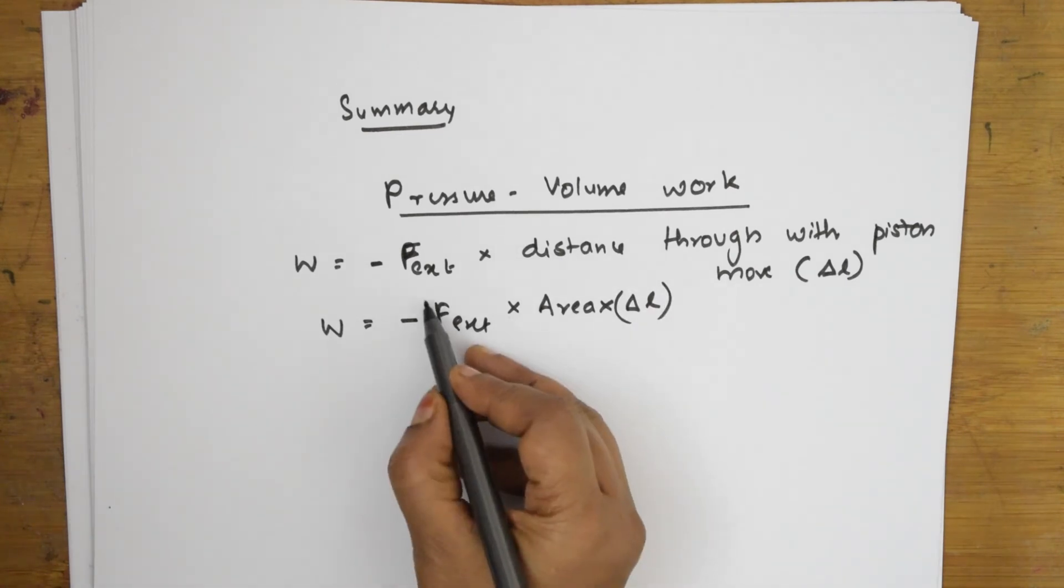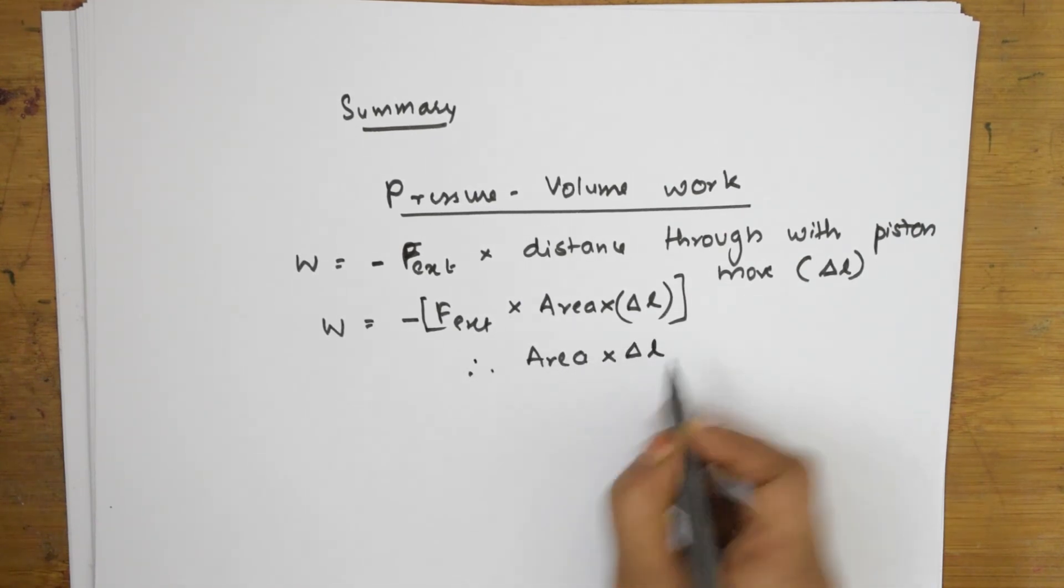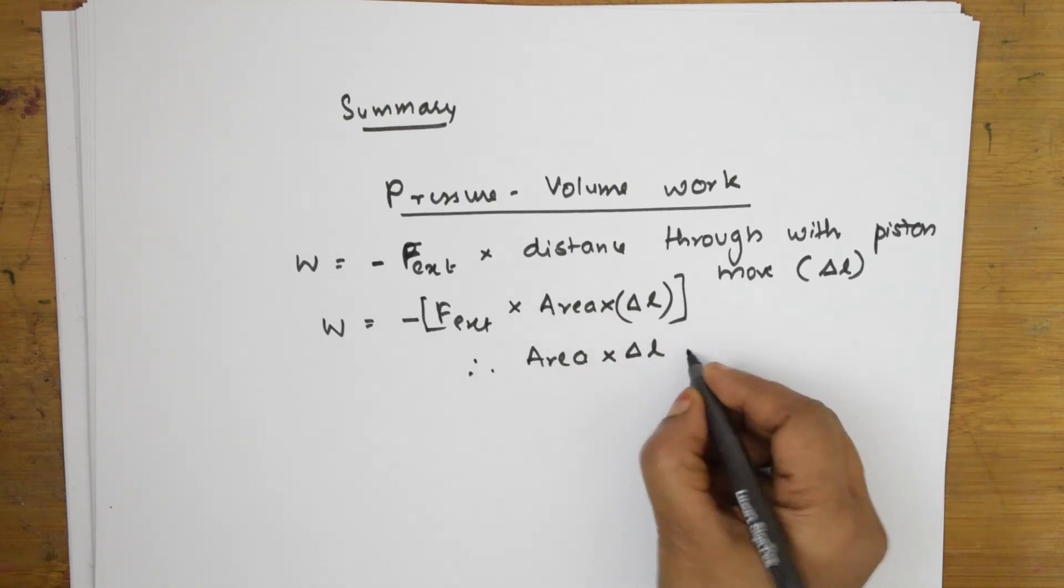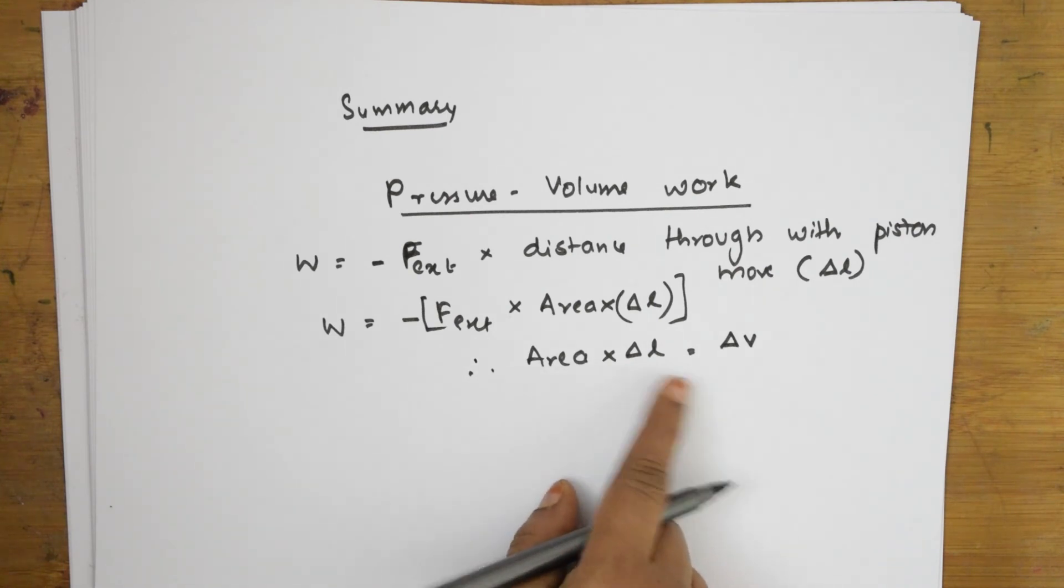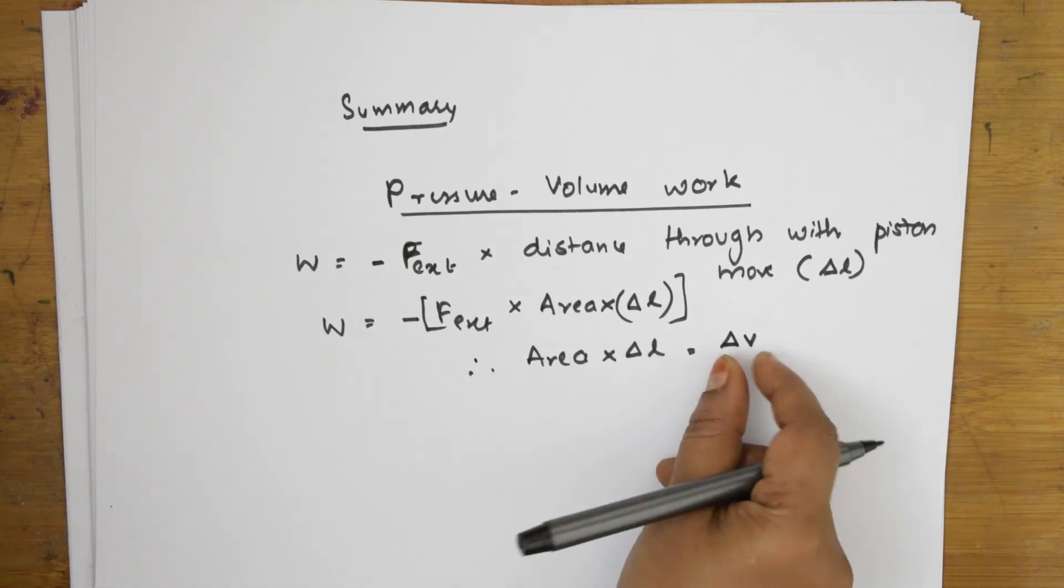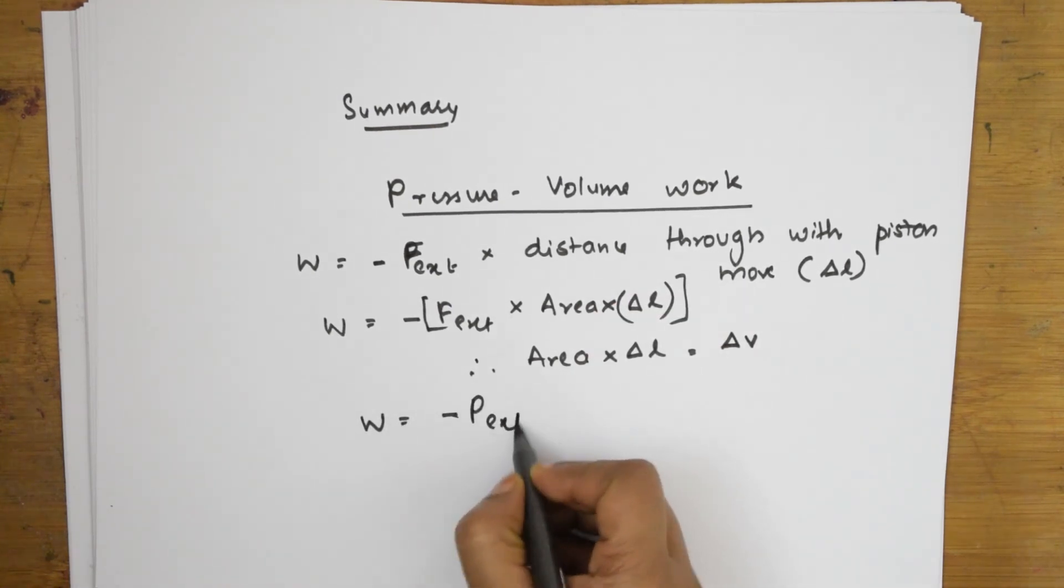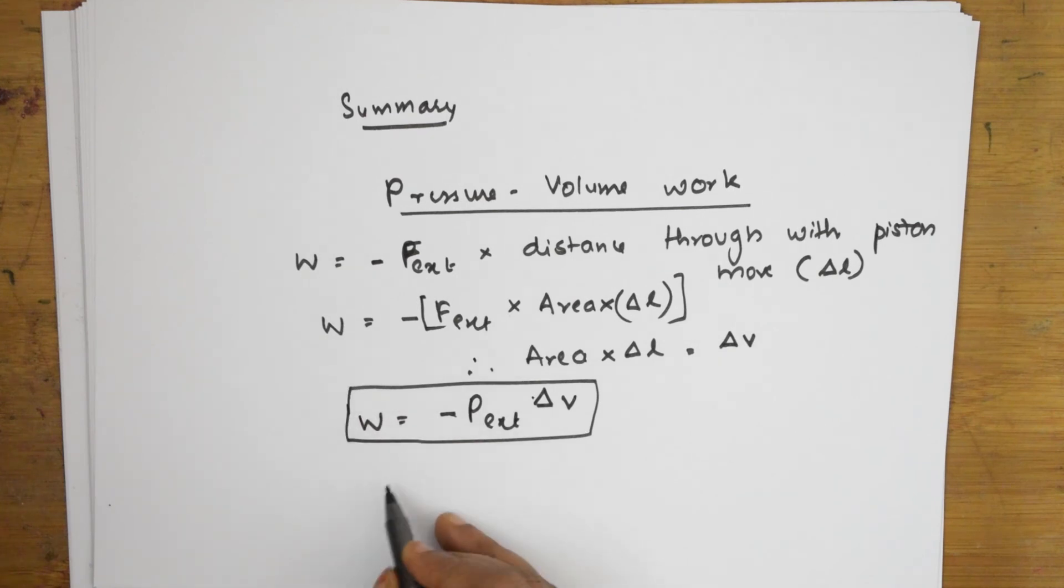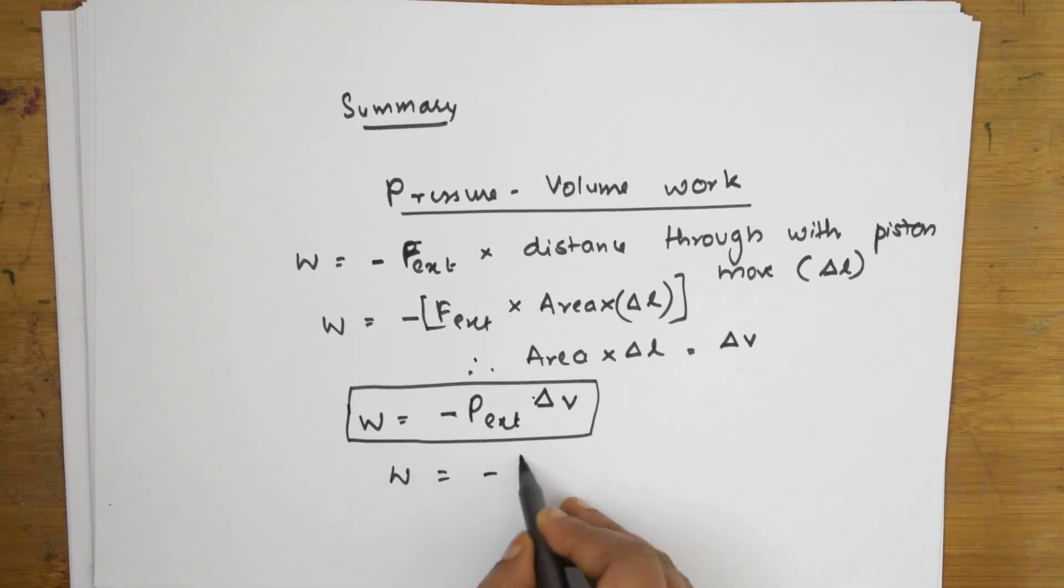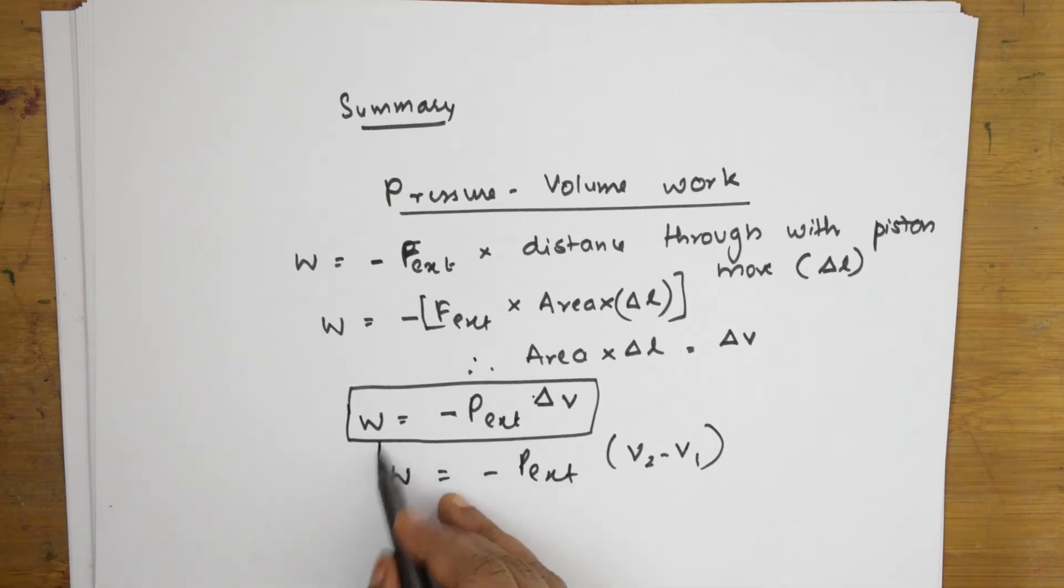So, W is equal to minus F external into area into delta L. Why did I write this? Because area, what is area equal to? Area into delta L. What is area? Area into delta L is nothing but delta V, you know? Correct? Again, the displacement, how much of a distance does move. So, take this and substitute. W is equal to minus P external into delta V. This is one formula which I got. So, W is equal to minus P external into V2 minus V1. Final minus initial. This is one more formula.